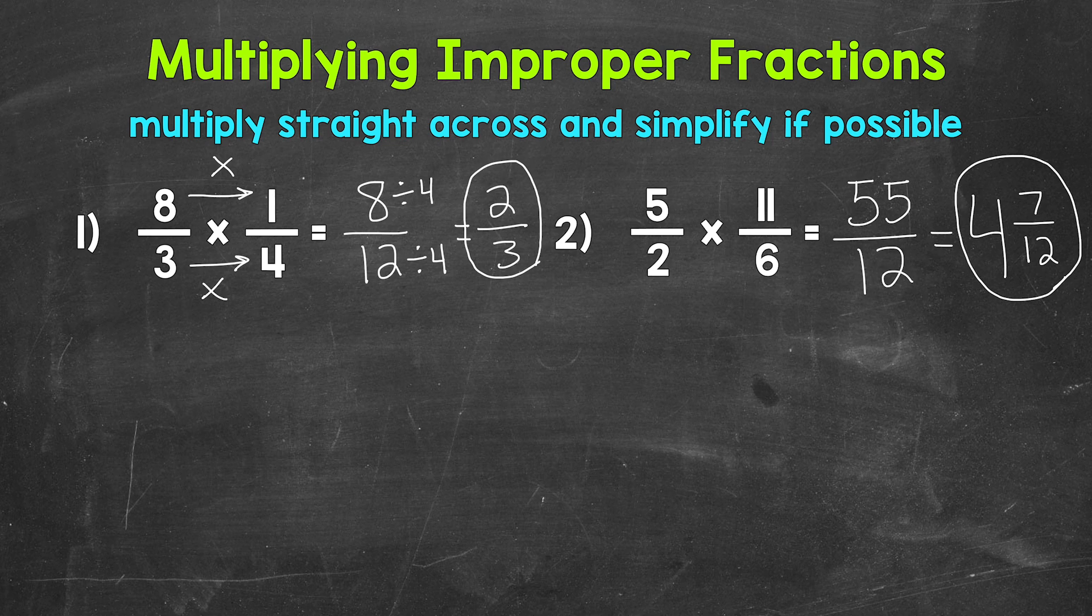Now, I do want to review real quick how we went from that improper fraction to a mixed number by writing out all of the steps. We divided the numerator, 55, by 12. So, 55 divided by 12. How many whole groups of 12 in 55?